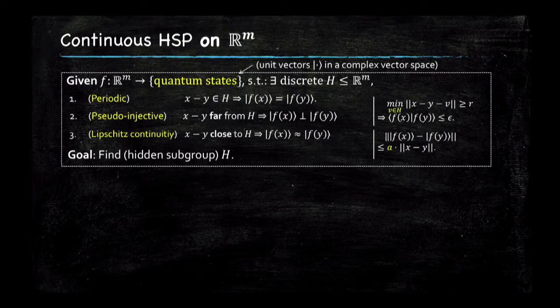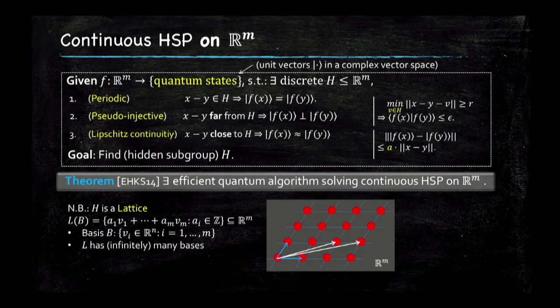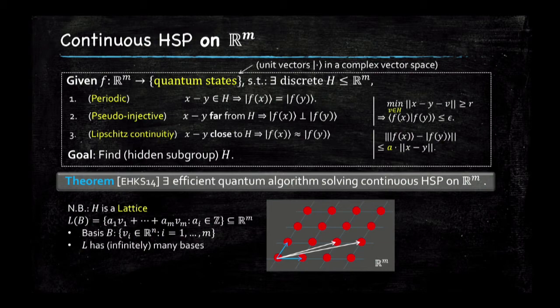Given a function that satisfies those conditions, you can apply the quantum solver for the hidden subgroup problem. We need the notion of a lattice. When applying the hidden subgroup problem in R^m, you're looking at a discrete subgroup of R^m, which turns out to be a lattice — all integer linear combinations of a set of points in R^m. In dimension two, it looks like a grid defined by two basis vectors — an infinite grid made of all the red dots.